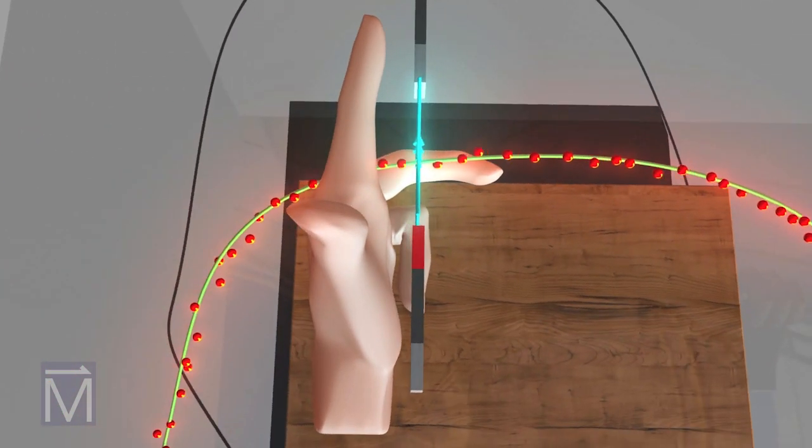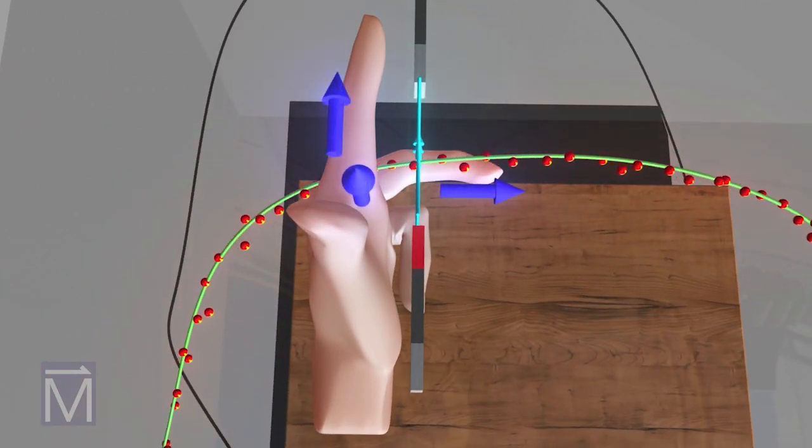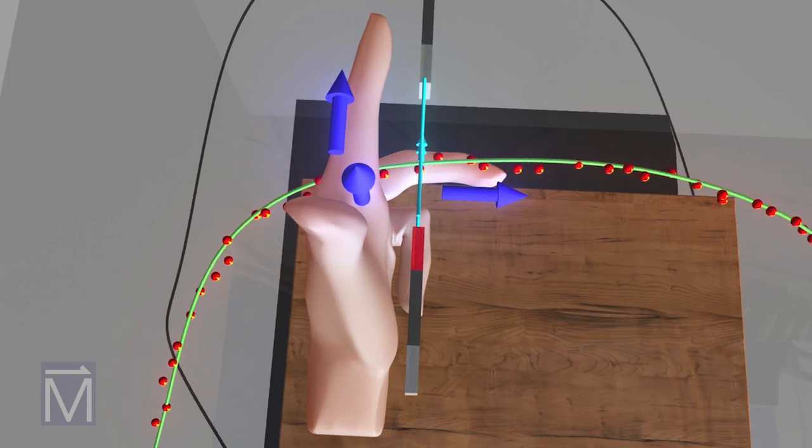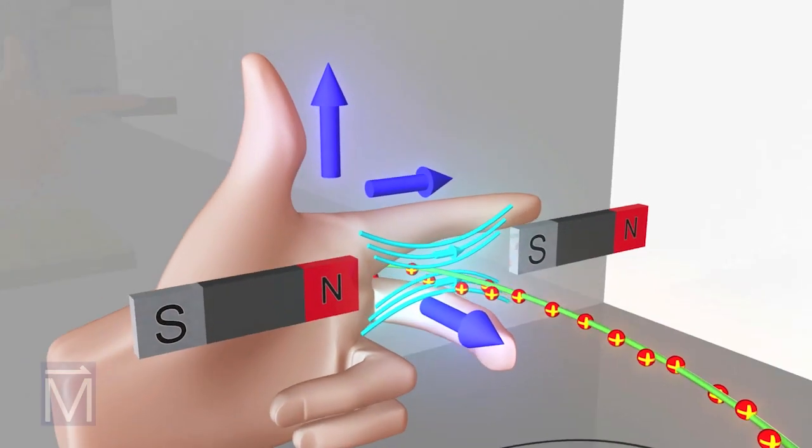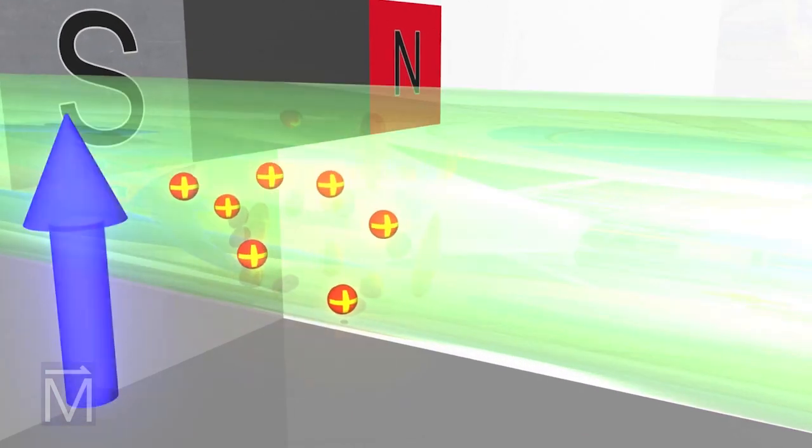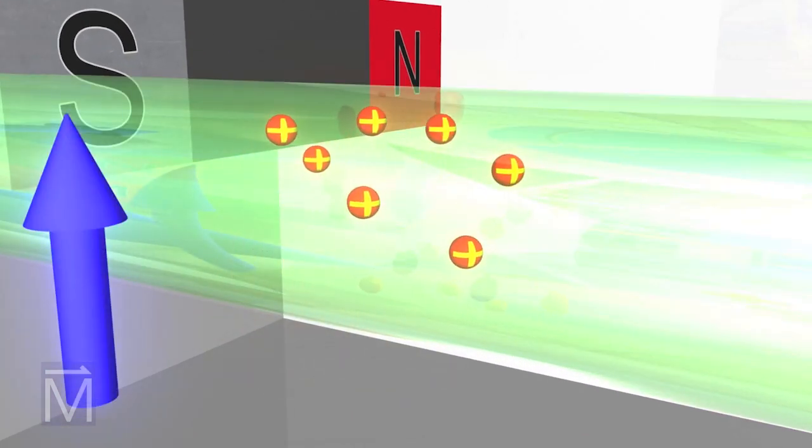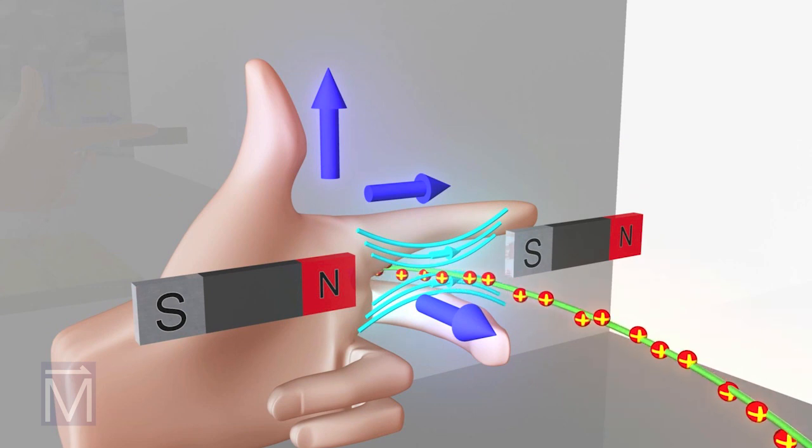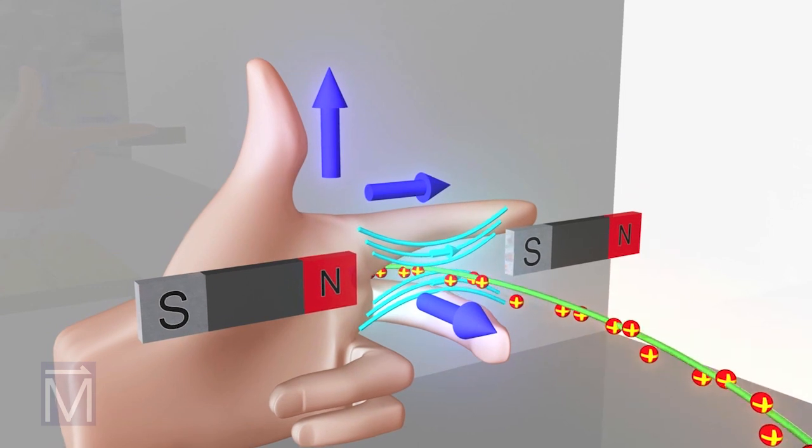Position your left hand like so, with your index finger pointing in the direction of the magnetic field, your middle finger pointing in the direction of the current, and your thumb pointing up, forming a right angle with your index finger. Your thumb shows the direction of the force, called the Lorentz force, exerted on the charged particles. This is known as the left hand rule.